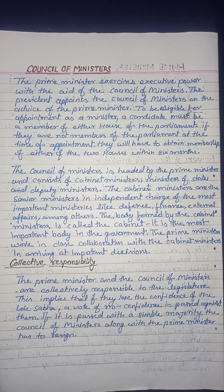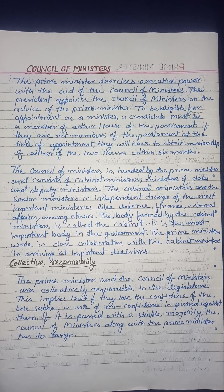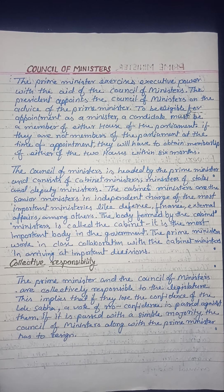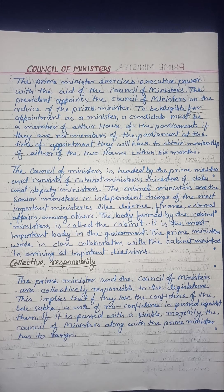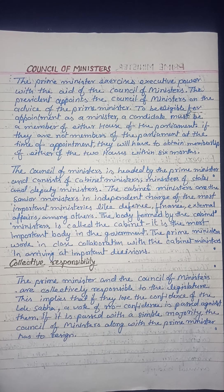Good morning everyone. Today we are going to study the civics chapter 4, the union executive. In the last class we studied about the union executive composition, terms, and the eligibility of the president, vice president, and prime minister.